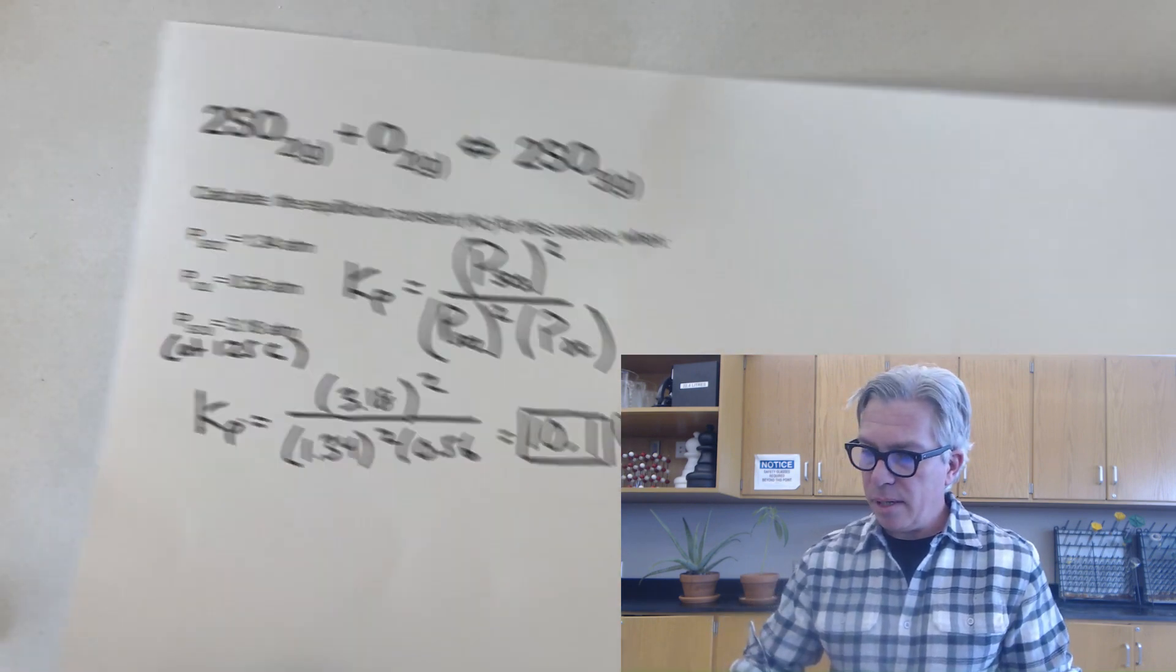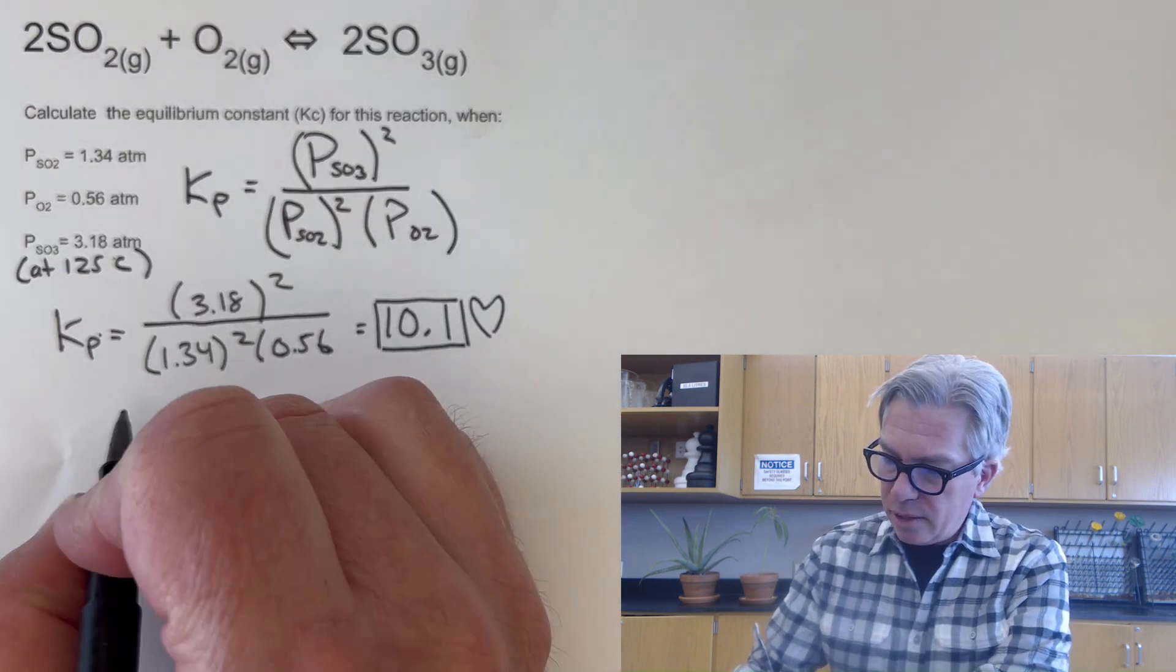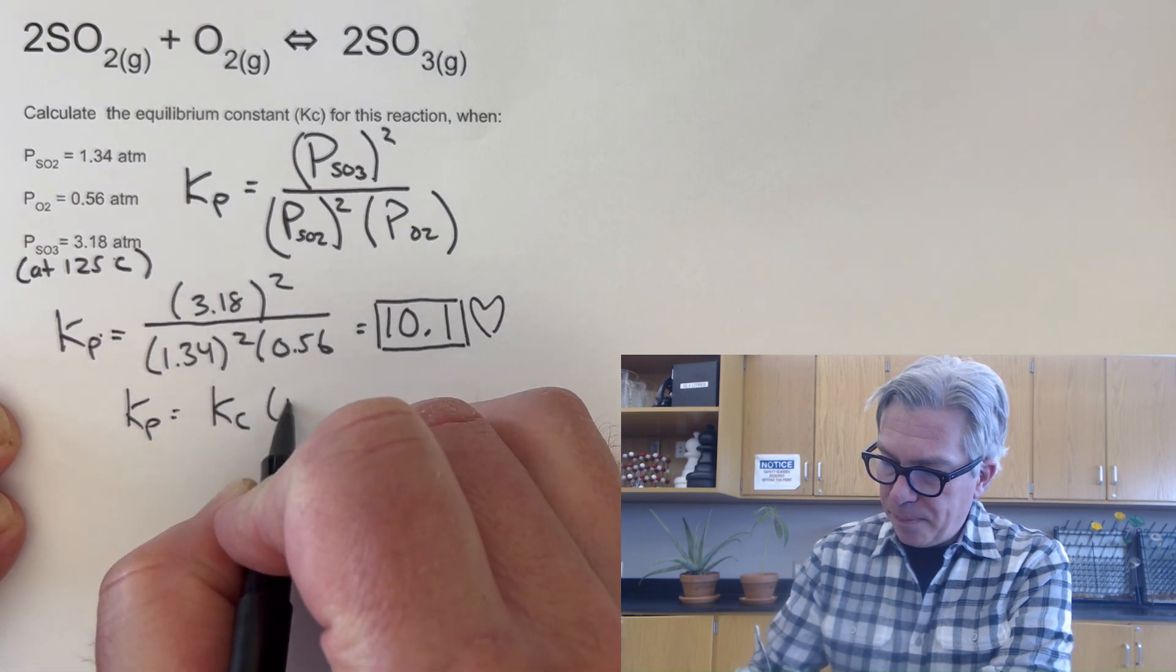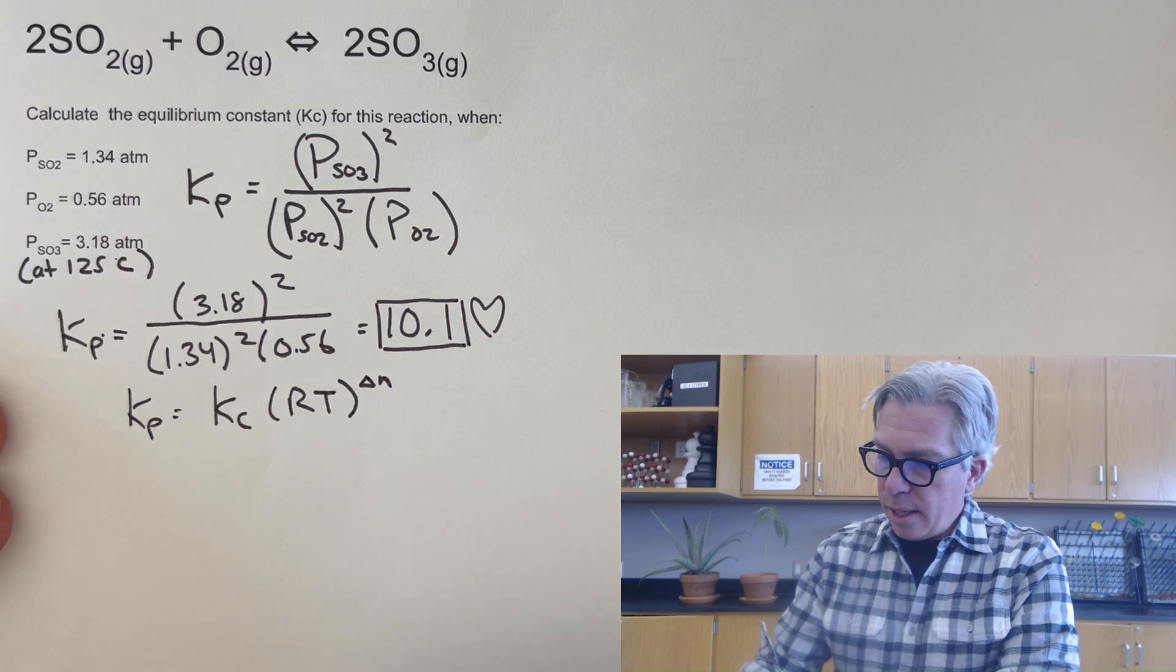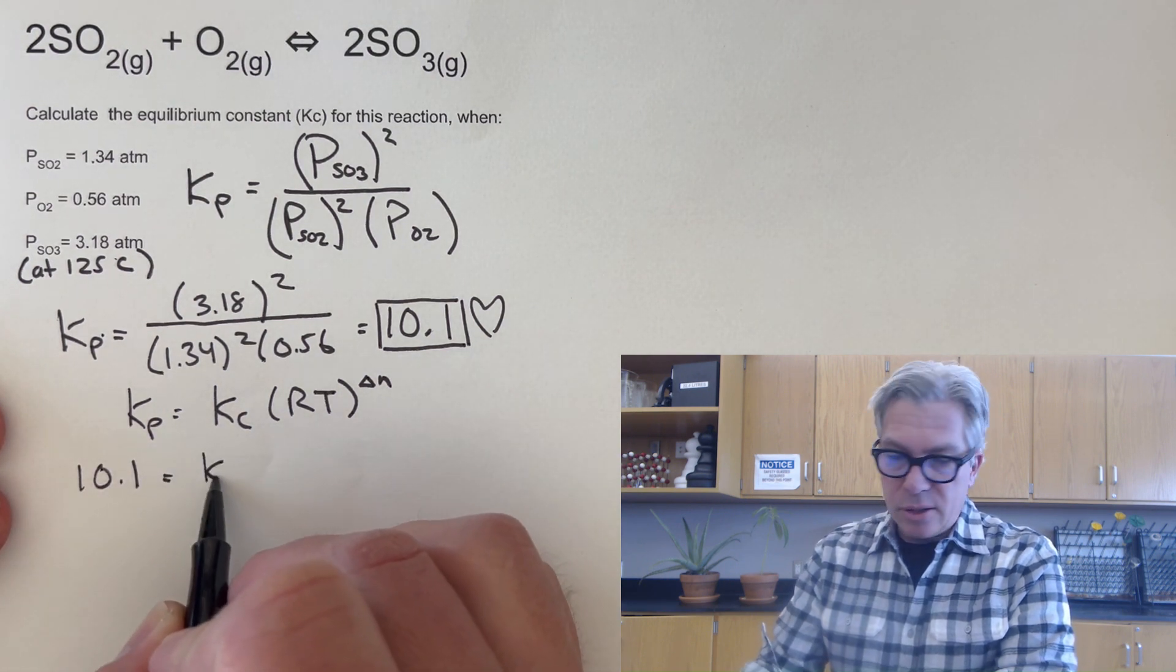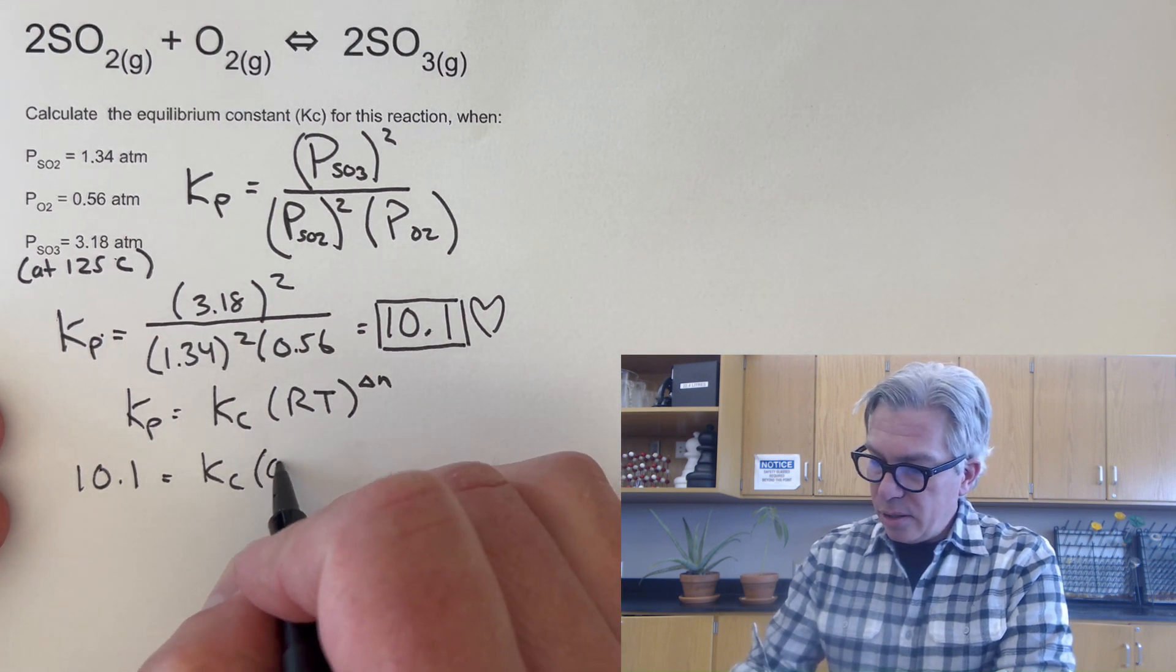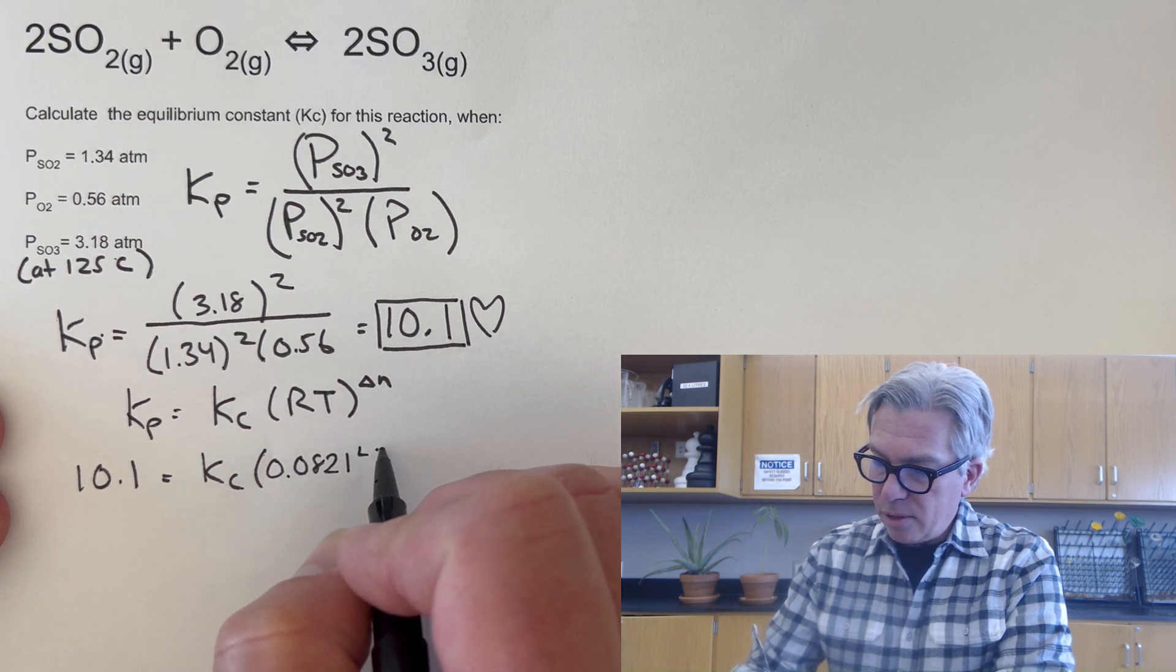And here's my Kp value again. So if I want to find Kc, I'm going to use this formula: Kp equals Kc times RT to the delta n. Kp is 10.1, and I don't know what Kc is, so I'm going to have to leave that as my variable.